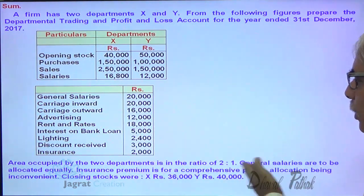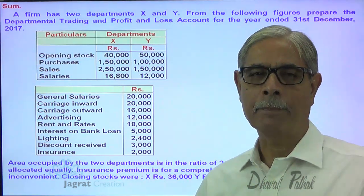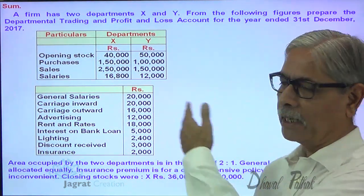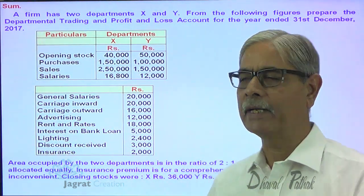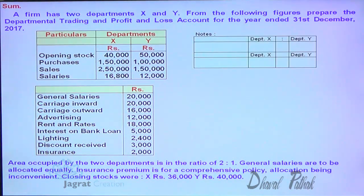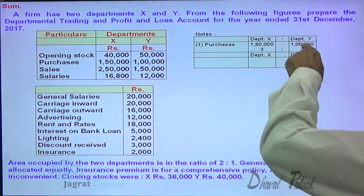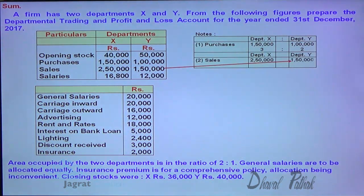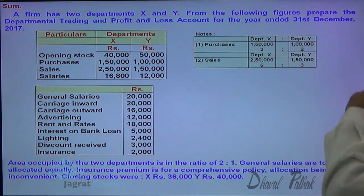General salary will be distributed equally. Carriage inward in the proportion of purchases. Advertisement in the proportion of sales. Carriage outward in the proportion of sales. Let me first find out the purchase ratio and the sales ratio. The purchase ratio of department X and Y is 3:2. The sales ratio is 25 to 15, which is 5:3.